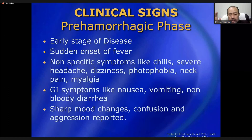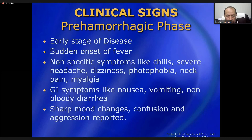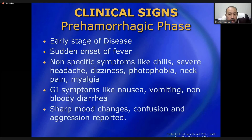GI symptoms including nausea, vomiting, and non-bloody diarrhea are present. Mood changes, confusion, and aggression have been reported. When facing a patient with high-grade fever associated with these symptoms — especially photophobia, aggression, confusion, and myalgia — think about CCHF and ask whether the patient is an animal handler or has had contact with animals.